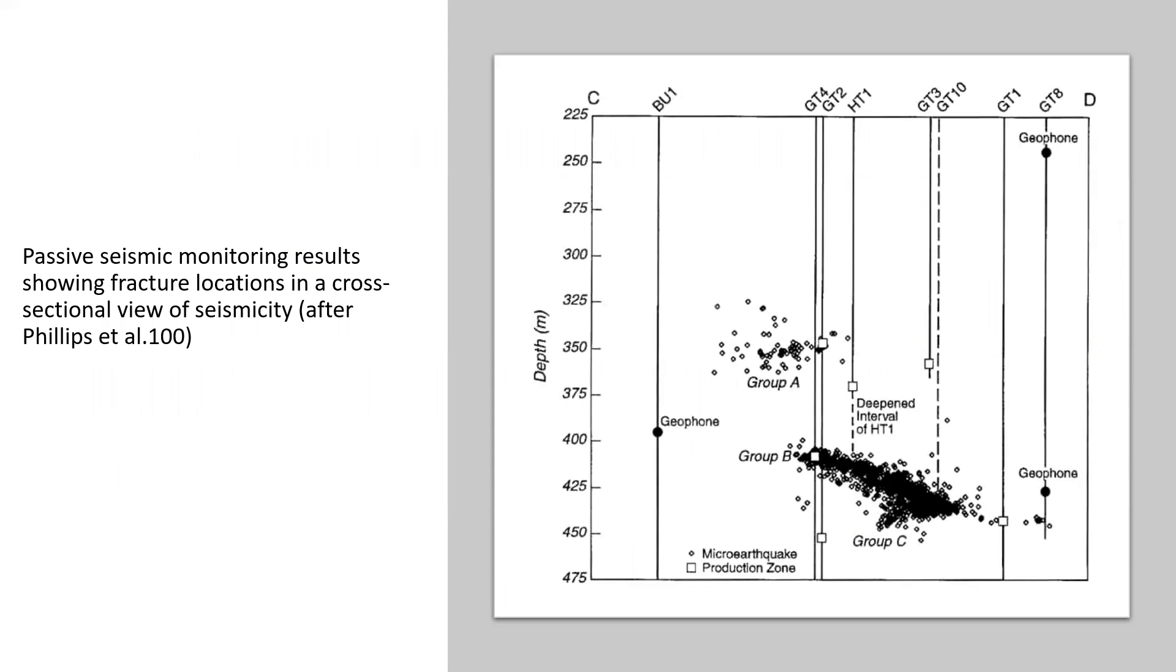This is just one example that how passive seismic monitoring results help to find the fractures, to find the fracture locations in a cross sectional view of seismicity and intervals of gas production. This figure is also showing the location of earthquake source and the position of geophones at different depths and micro fractures in the rocks. So many more examples can be found in the literature. In short, passive seismic monitoring is a great tool in reservoir geophysics studies. It provides a lot of information, including deformation monitoring for reservoir management and optimization, monitoring of fluid leakage for environmental and economic consideration, and provides additional time lapse constraints for reservoir simulation.